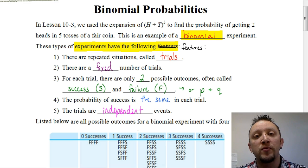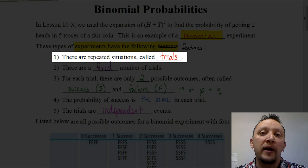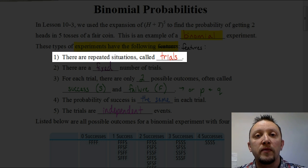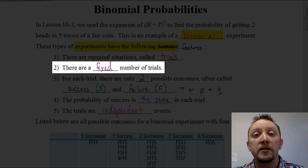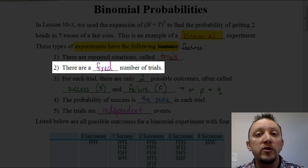There are five properties of binomial experiments. The first property is that all binomial experiments are going to be repeated situations called trials. Every time that we do an experiment, we call that a trial. The second property is that there's always going to be a fixed number of trials, meaning they're not going to go on infinitely. You might have a trial with 50 occurrences, or you might do an experiment 100 times, so you'd have 100 trials. It's always going to be a fixed amount.